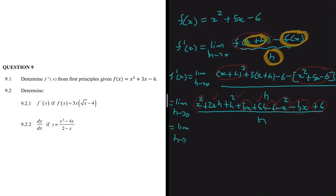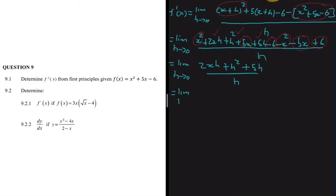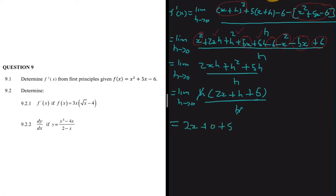So the limit as h turns into 0 is (2xh + h² + 5h) divided by h. We take h as a common factor in the numerator, giving h(2x + h + 5) divided by h. The h's cancel, and then letting h turn into 0, f prime of x equals 2x + 0 + 5, which is just 2x + 5.